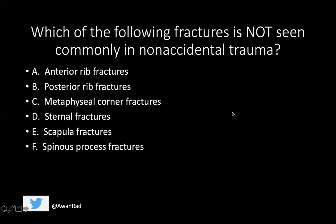Coming back to the opening question: which fracture is not commonly seen in non-accidental trauma? It's actually anterior rib fractures — those can happen when babies fall down stairs. Posterior rib fractures, metaphyseal corner fractures, and the three S's — sternal, scapular, and spinous process fractures — are all associated with child abuse. Although the three S's can occur in adults, they're much less common in children, so seeing them in a child should raise your suspicion. Metaphyseal corner fractures are pathognomonic. You should call Child Protective Services and local authorities when you identify non-accidental trauma.